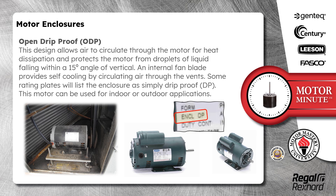Open drip proof, ODP. This design allows air to circulate through the motor for heat dissipation and protects the motor from droplets of liquid falling within a 15 degree angle of vertical. An internal fan blade provides self-cooling by circulating air through the vents. Some rating plates will list this enclosure as simply drip proof, DP.